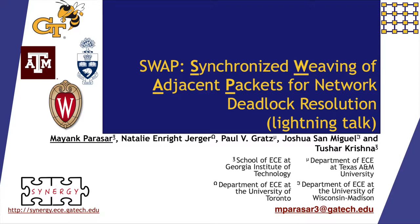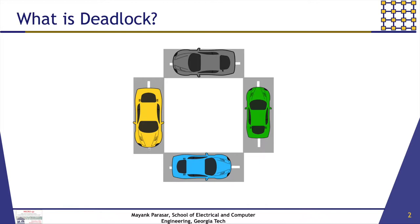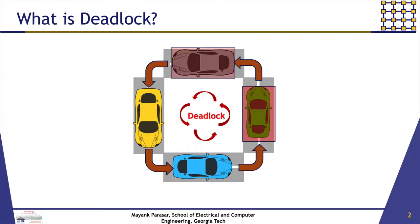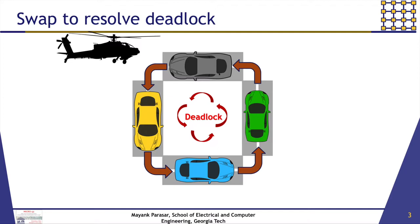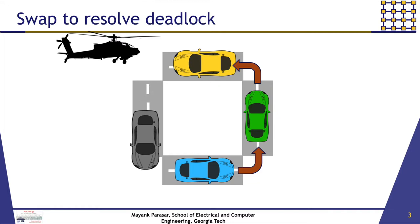To visualize deadlock, let us consider a traffic deadlock. Here, each car is waiting on the next car to move in order to make forward progress. This cyclic dependency results in a traffic deadlock. Suppose using a chopper, if we could swap the position of cars stuck in the deadlock, then we could resolve traffic deadlock.